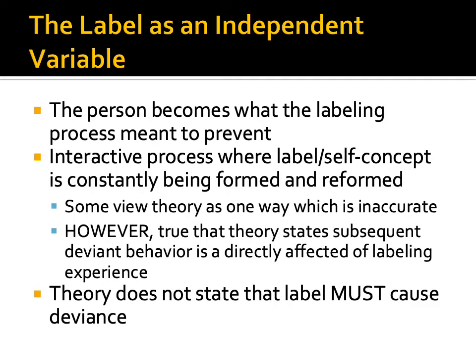The label as the independent variable is interesting because the person becomes what the labeling process was meant to prevent. There's an interactive process where the label and self-concept are constantly being formed and reformed in every interaction — which is also why in some friend groups you behave one way and in others you behave differently. The theory states subsequent deviant behavior is directly affected by the labeling experience; the label doesn't have to cause deviance, but it pushes you more toward it.